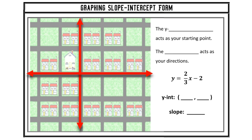Graphing a line using slope-intercept form is a lot like following directions from one house to another. The y-intercept acts as your starting point — this is your house, wherever you're leaving from. The slope will act as the directions that a friend or GPS may be giving you. So we need to analyze the equation to find these two very important pieces.